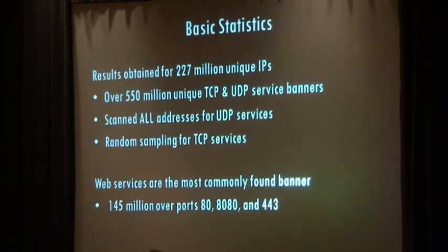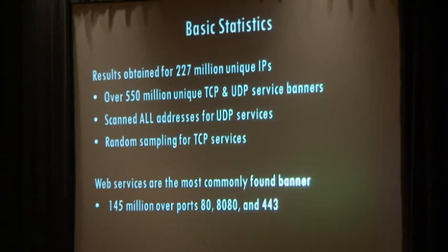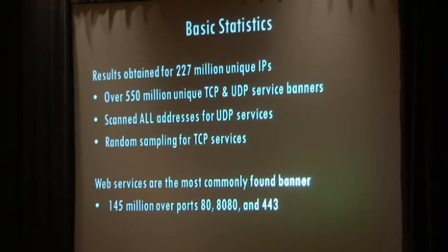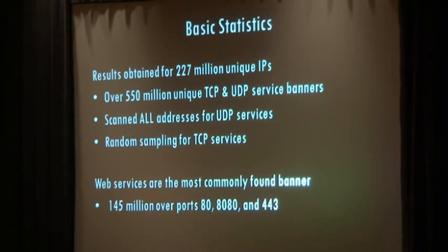At the time I put this together, the dataset contained about 227 million unique IP addresses, about 550 million unique TCP and UDP banners, and breaking it down by timestamp plus banner gives around 1.6 to 1.7 billion records so far — and 2 billion total including duplicates. I'm scanning every IP on the internet for UDP services every seven hours for five months, cycling through ports using a frequency algorithm.